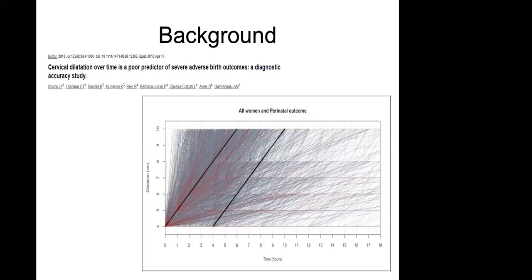The WHO then did a big project called BOLD — Better Outcomes and Labor Difficulties — where they assessed laboring women, progress of labor, and outcomes for mom and baby. These studies were done in Nigeria and Uganda, much closer to home for us, with nearly 10,000 women. They looked at whether cervical dilatation and progress of labor truly predicted adverse outcomes. Many believed that HIEs, perinatal deaths, and asphyxiated babies are due to poor progress of labor that we watched on a partogram without intervening.